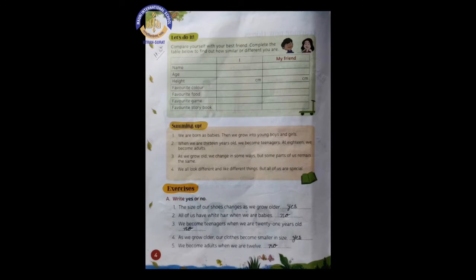Now number 5, we become adults when we are 12. Do you remember when we become adults? So let me revise you. At the age of 18 we become adults. And in the question what they give us? We become adults when we are 12. So that is wrong. So we have to write no.